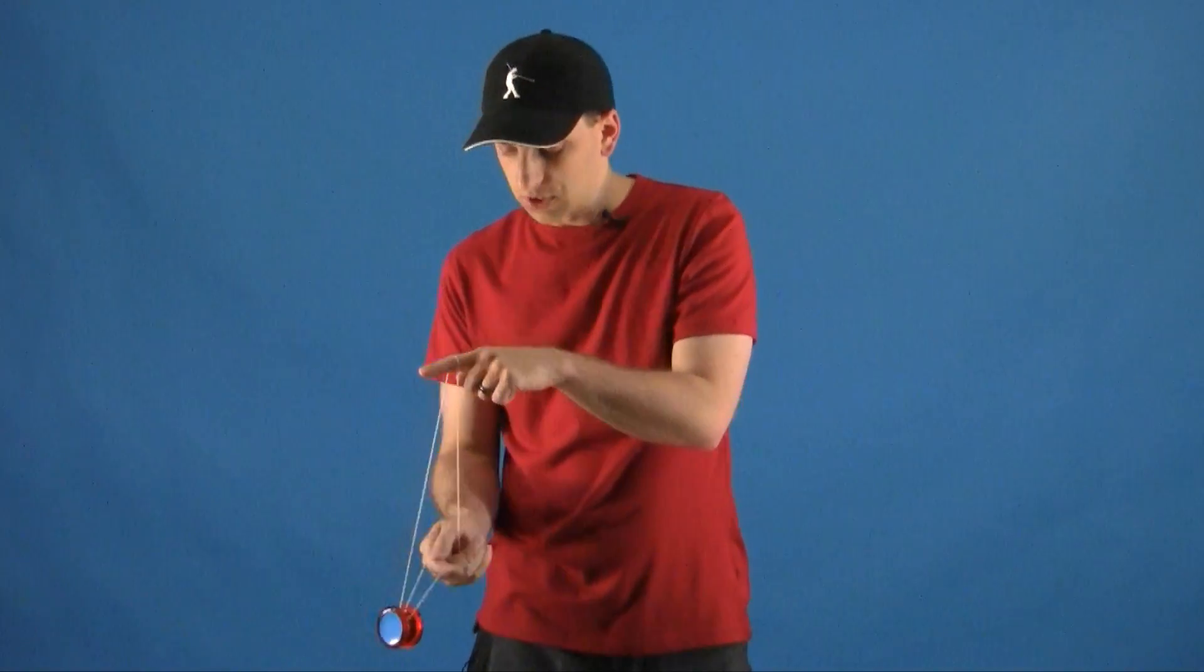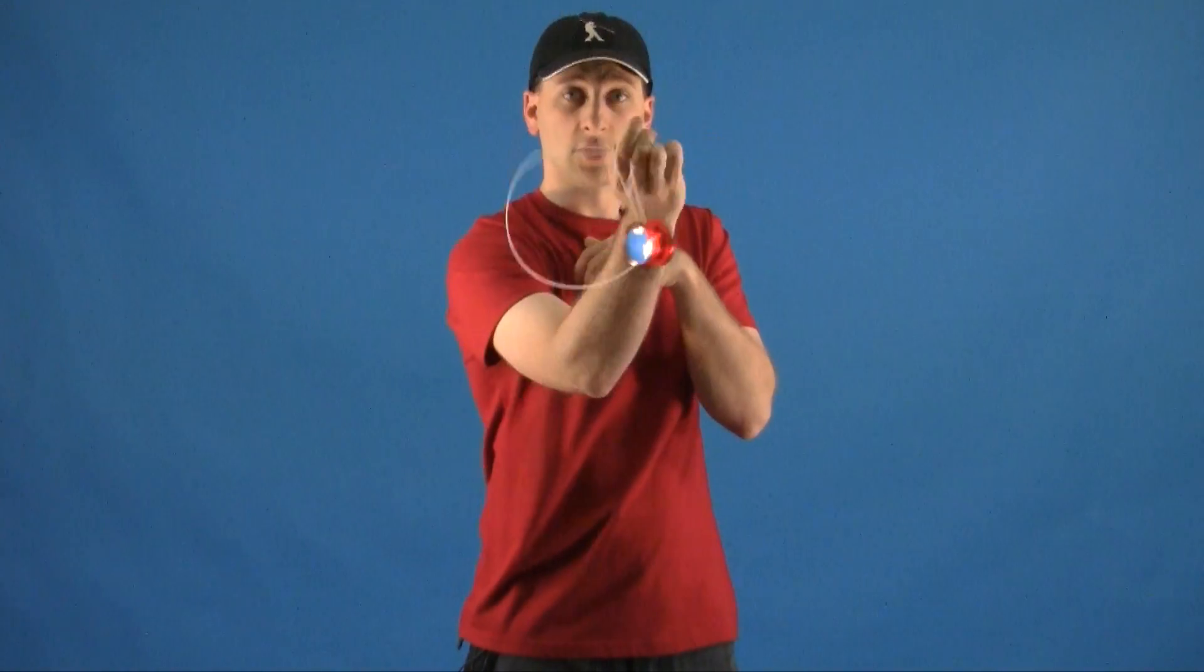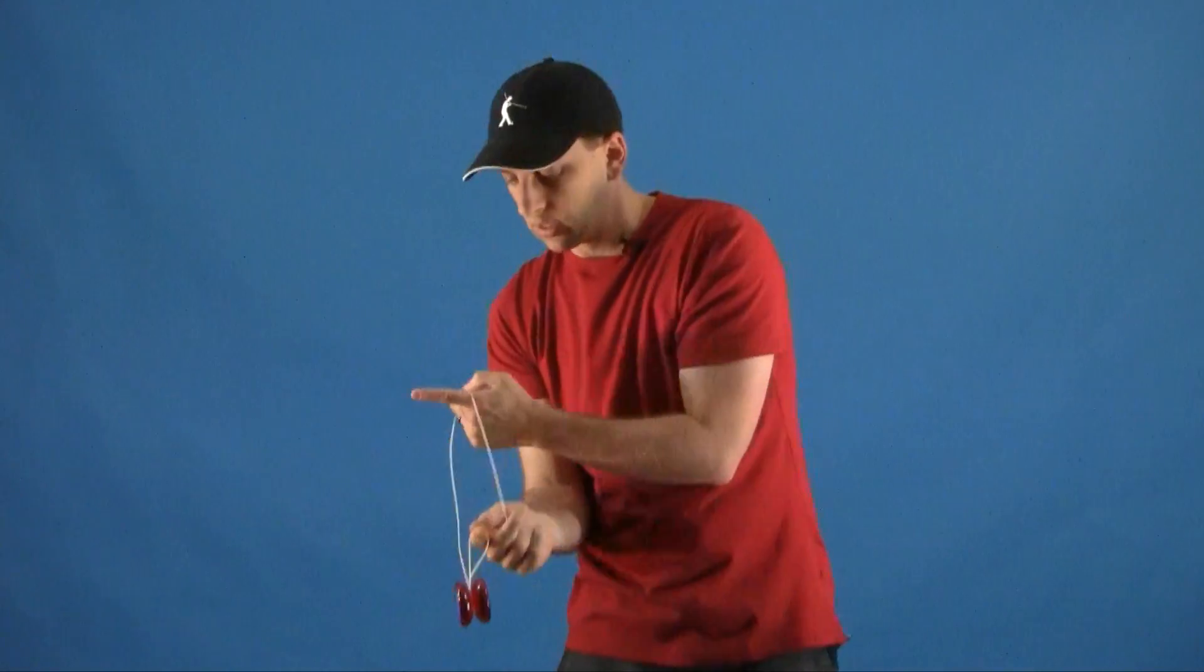To do your Revolutions, you're just going to swing the yoyo on the inside and outside of your wrist just like that. You want to make sure that when you're doing the trick, your first swing is actually going to be on the inside.